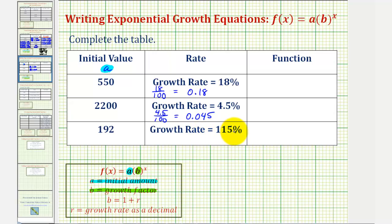And then for the growth rate of 115 percent, this is going to be 115 divided by 100, which would be 1.15.